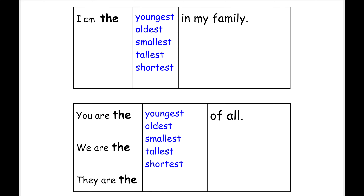Okay students, now if you want to talk about 'I', you need to say 'I am'. I am the youngest in my family. I am the oldest in my family. I am the smallest in my family. I am the tallest in my family. I am the shortest in my family.